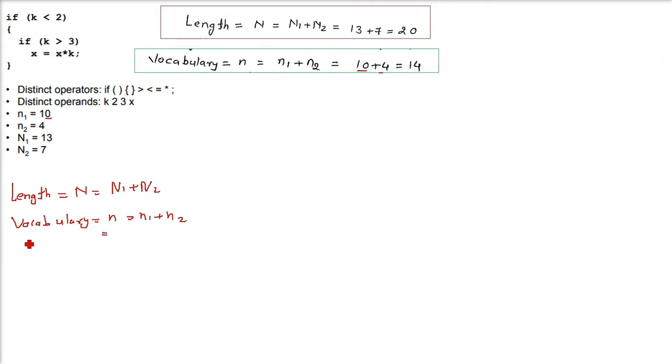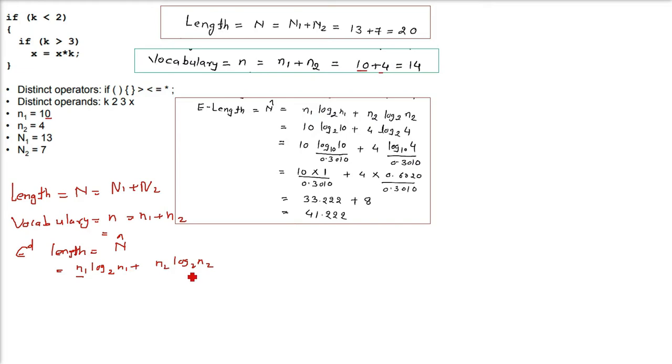Then the estimated length, represented by n cap. n cap will be n1 log base 2 n1 plus n2 log base 2 n2. n1 is 10, n2 is 4. But log base 2, most scientific calculators can't calculate directly. For that, change log to base 10 and divide by 0.3010. Log10 of 10 is 1, and log base 10 of 4 is 0.6020. Computing it will be 41.222.